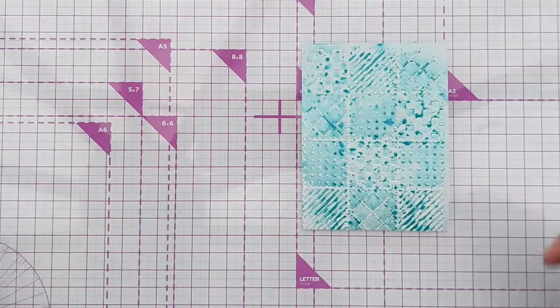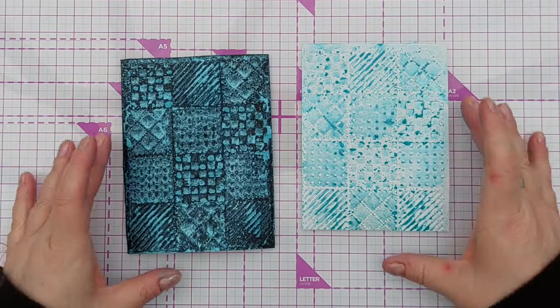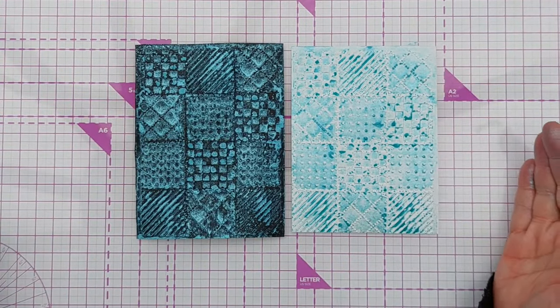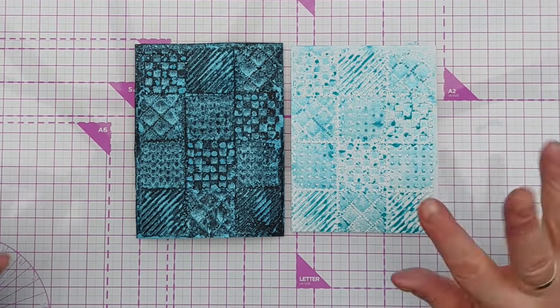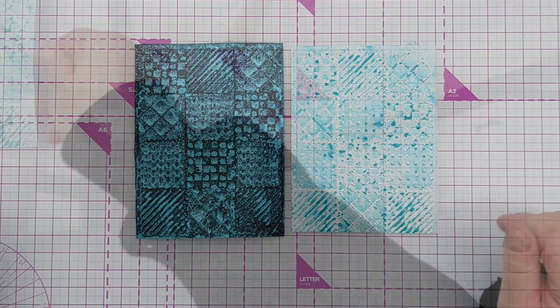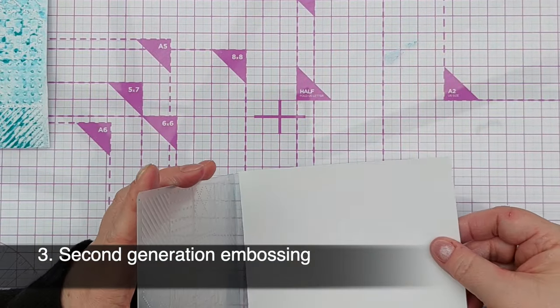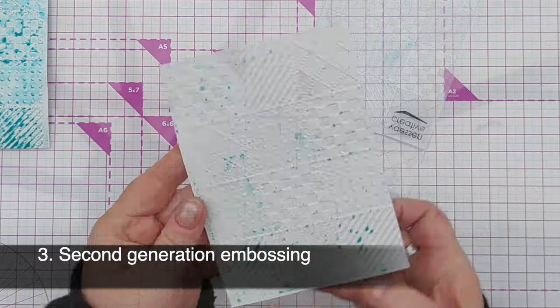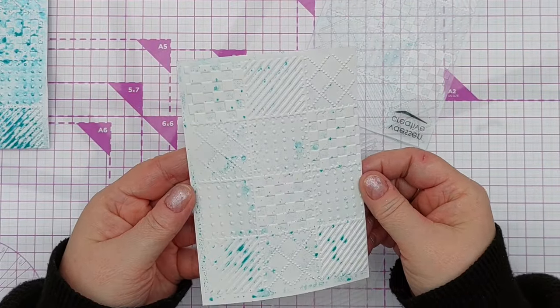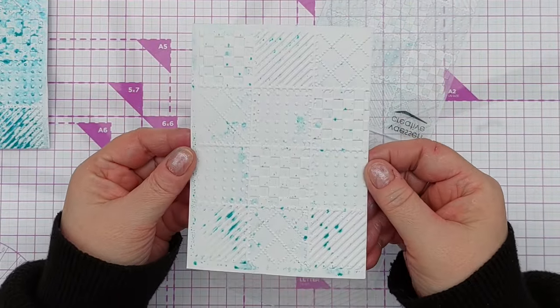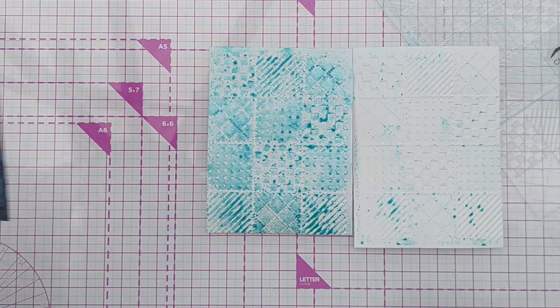And there again you get a lovely shimmery distressed looking background with lots of color and lots of shimmer and shine. You could run that through again so that it picks up whatever is left, and you get a much more subtle effect but it's very shimmery and shiny.